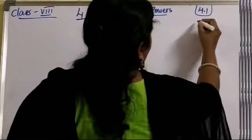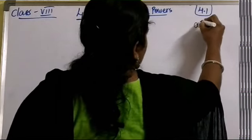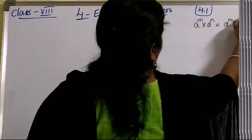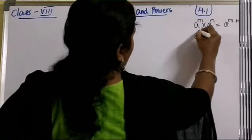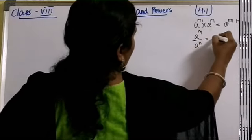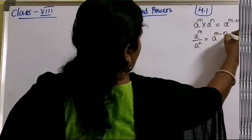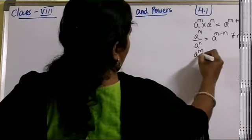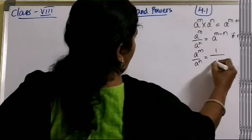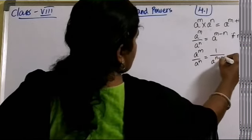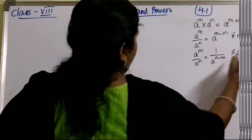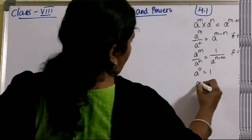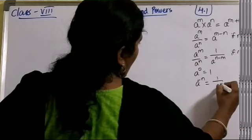Before solving, here we will write the laws first. Law 1: a^m × a^n = a^(m+n). Law 2: a^m ÷ a^n = a^(m-n) if m is greater than n. Law 3: a^m ÷ a^n = 1/a^(n-m) if n is greater than m. Law 4: a^0 = 1, and a^(-n) = 1/a^n.